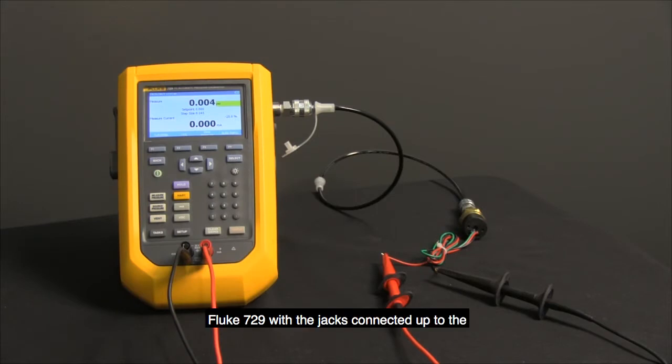You'll see we have the Fluke 729 with the jacks connected up to the contact points of the pressure switch, as well as the pressure line connected up.